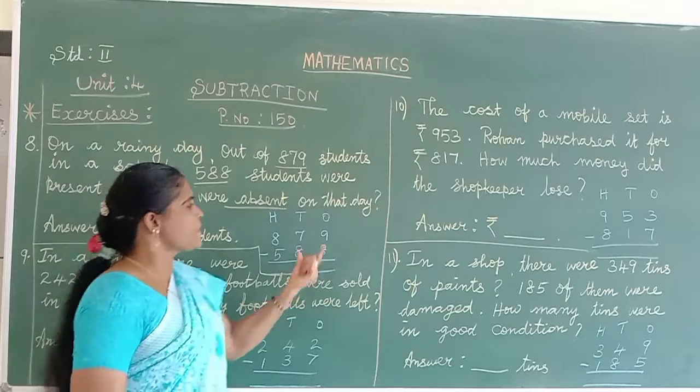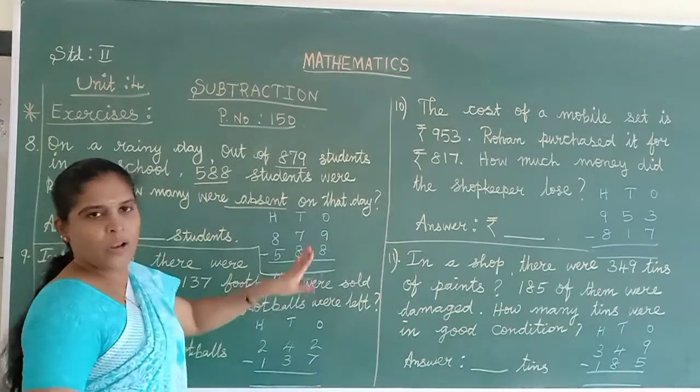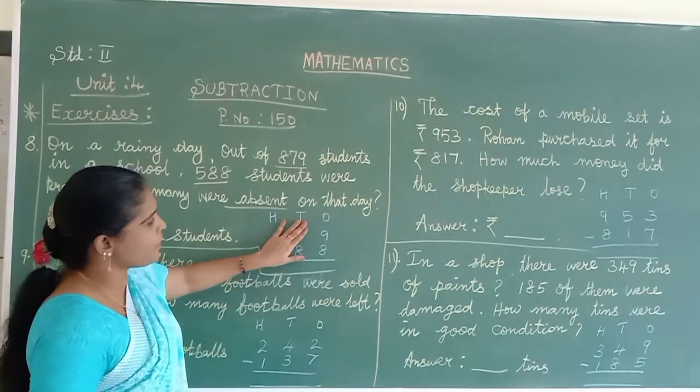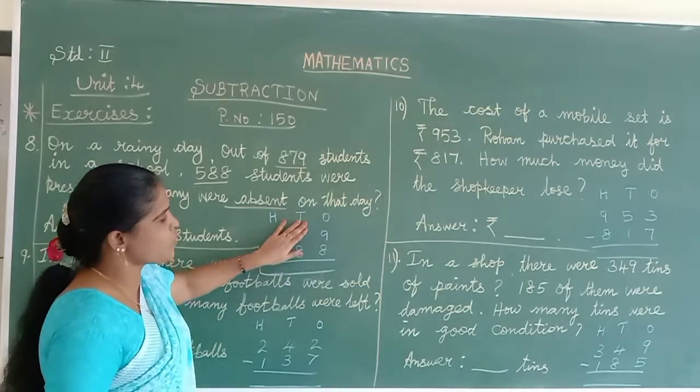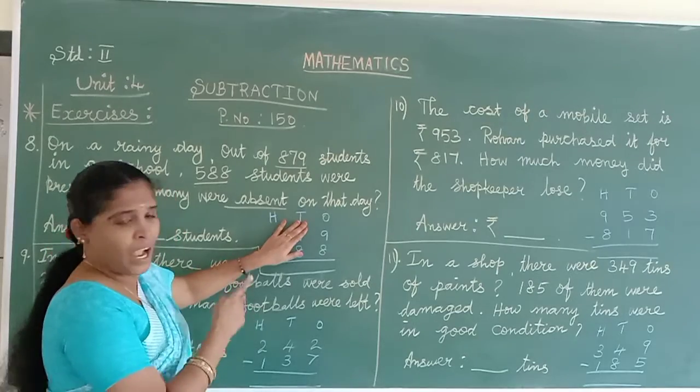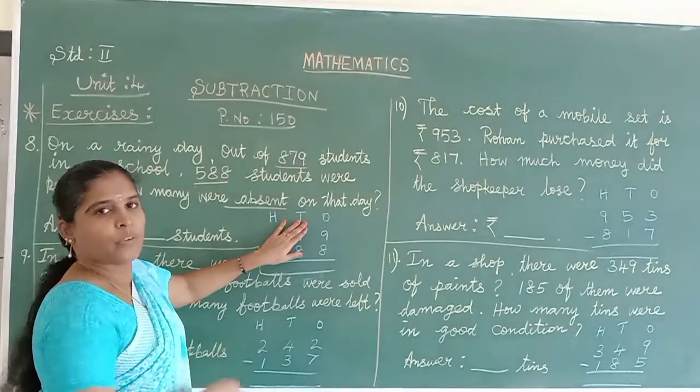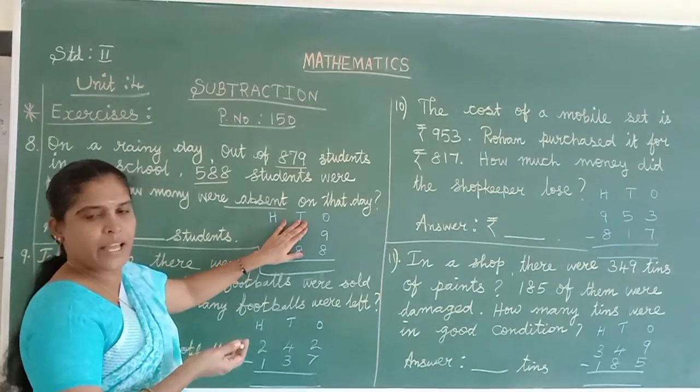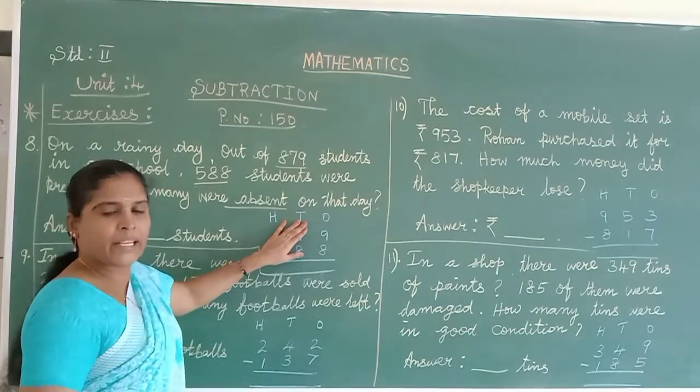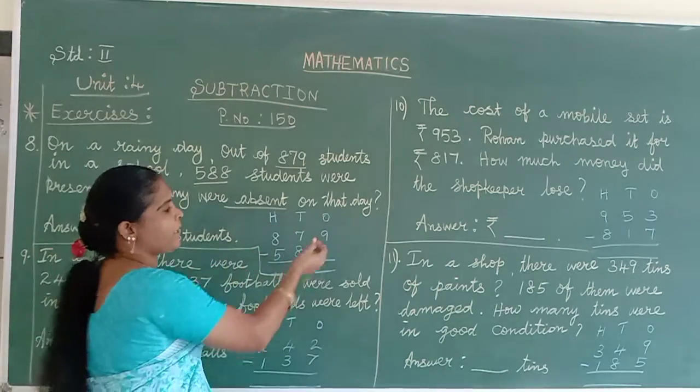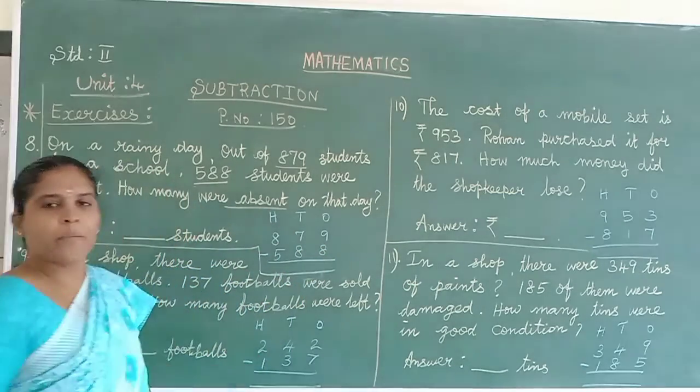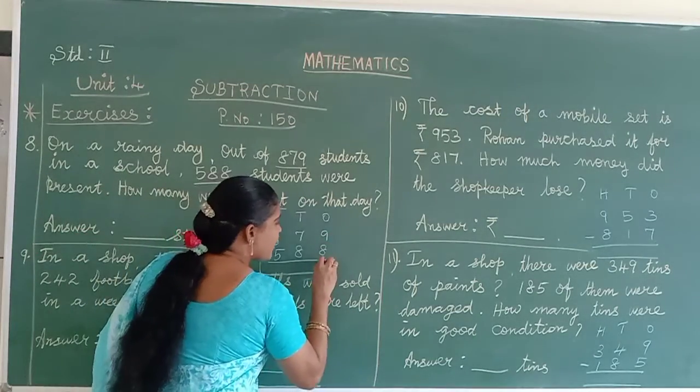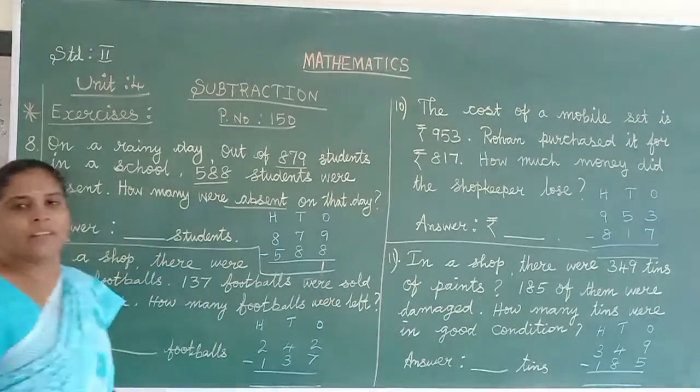Come to ones column first. While doing subtraction, hide the other numbers. 9 and 8, which is the bigger one? 9 is bigger than 8. The bigger number is on top, so no problem. Directly we can do the subtraction. 9 minus 8. 9 in the mind, 8 on your finger, before you count: 9 minus 8 equals 1.